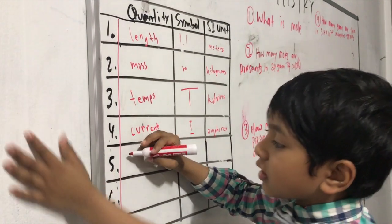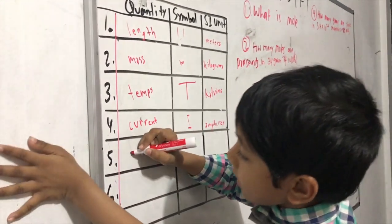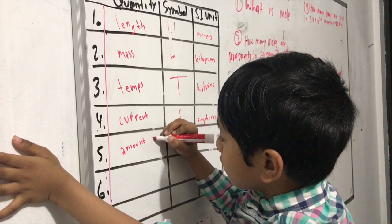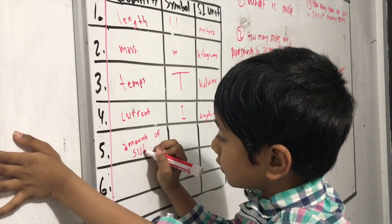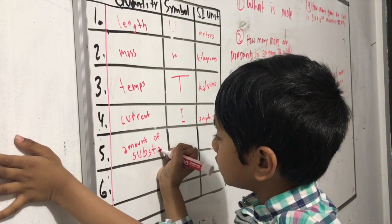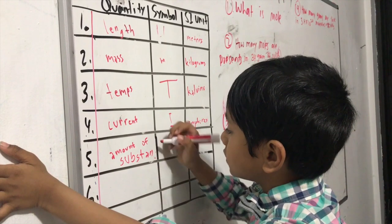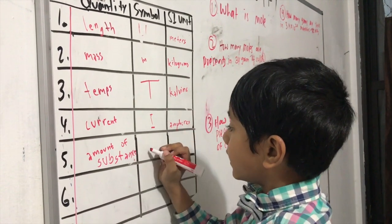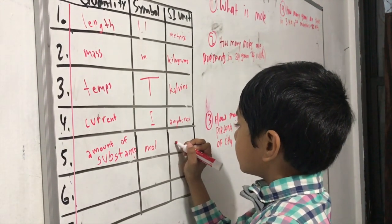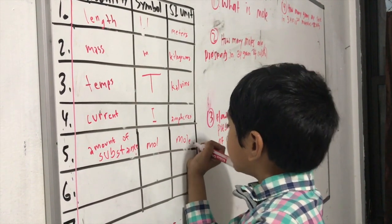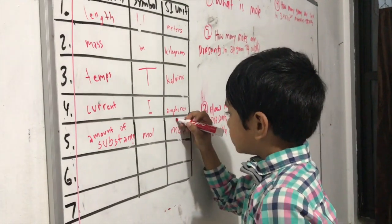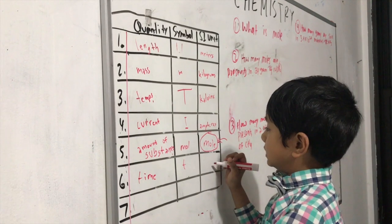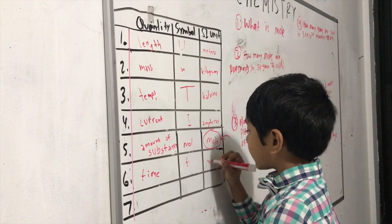Amount of substance. The symbol is M.O.L. And the SI unit is Moles. So, that's what I was talking about. The symbol for time is T. And the SI unit is seconds.